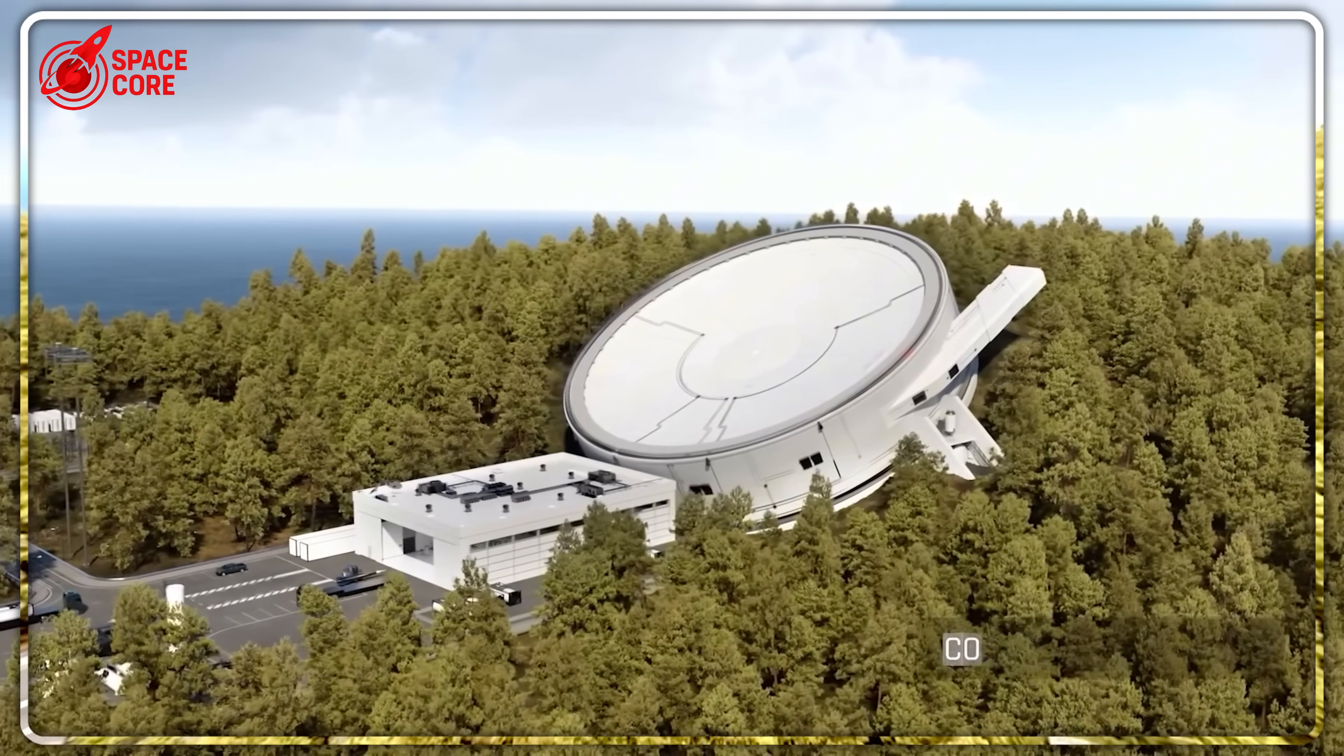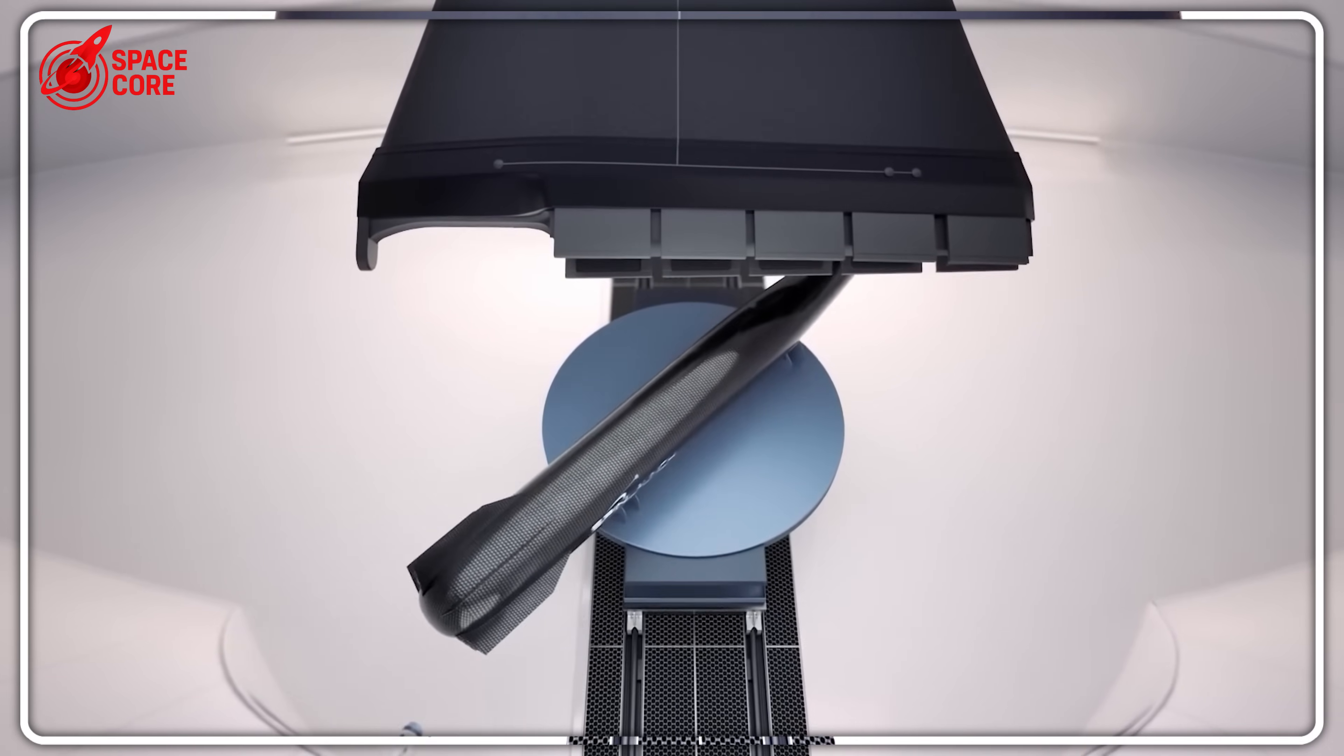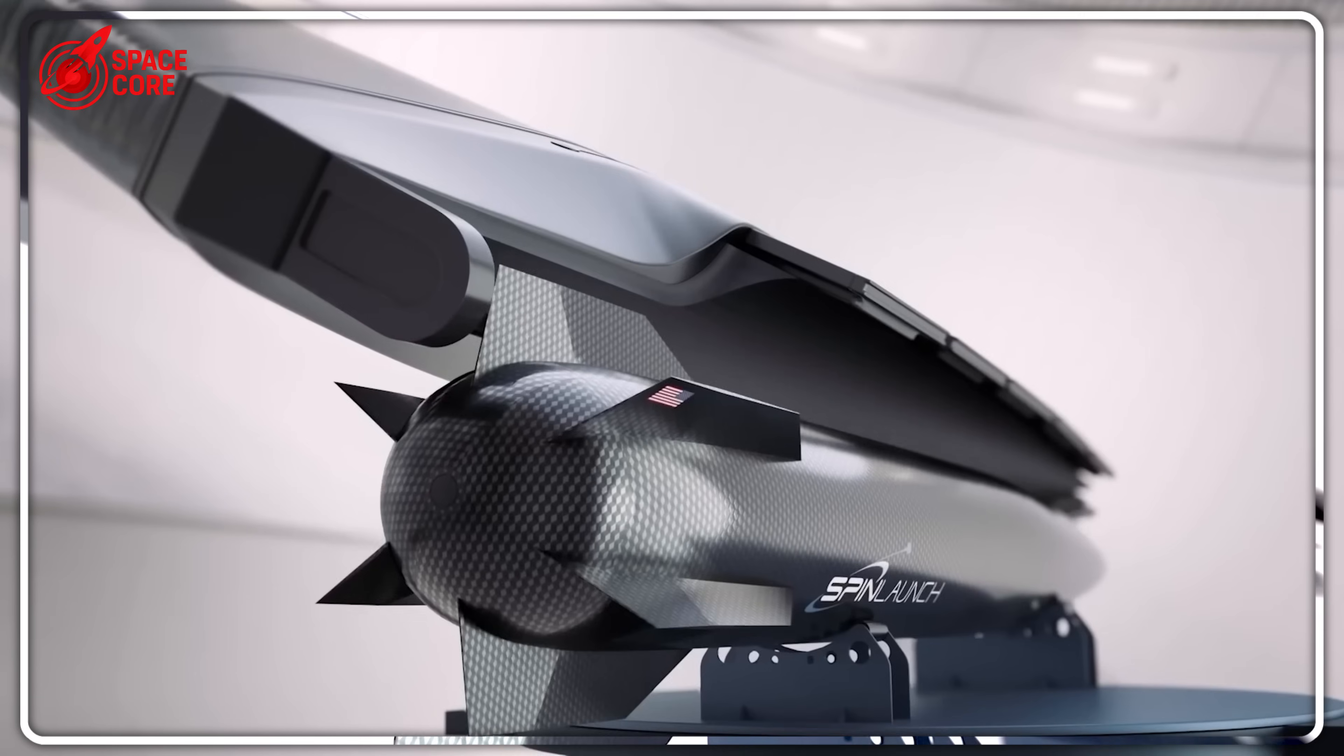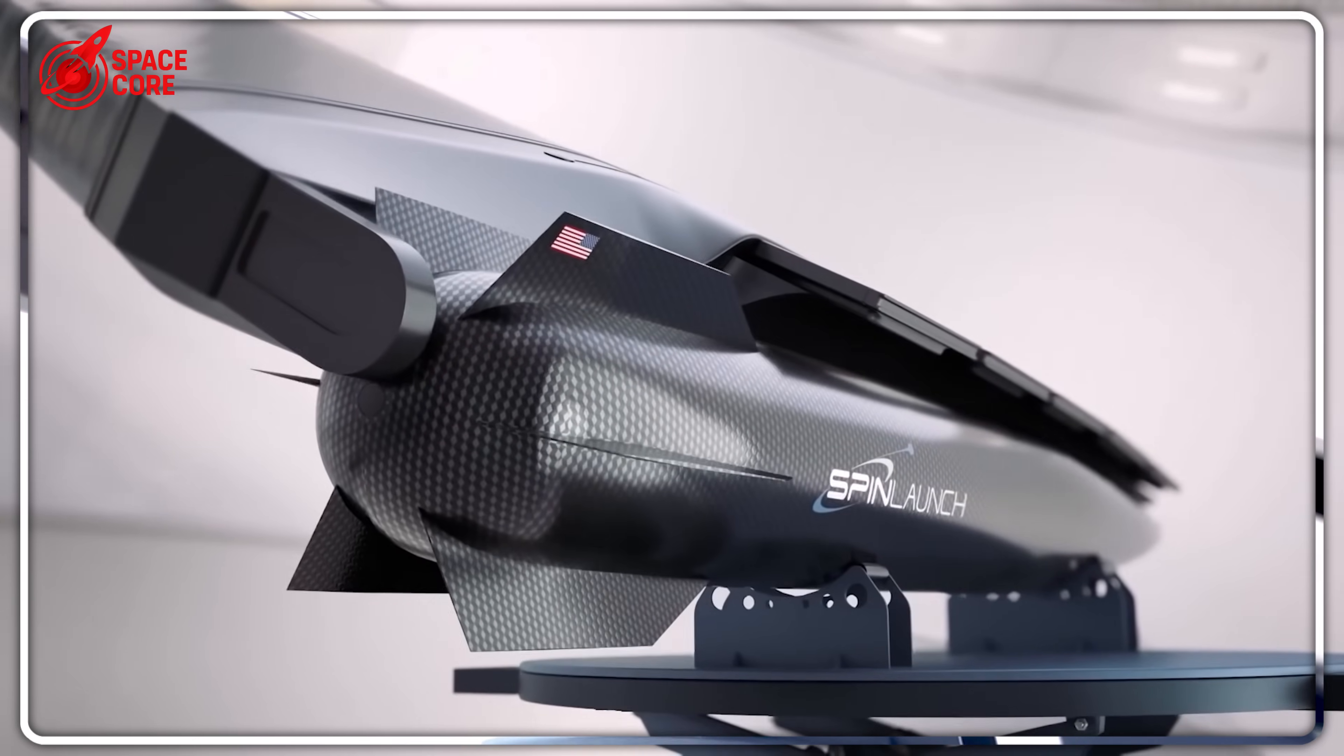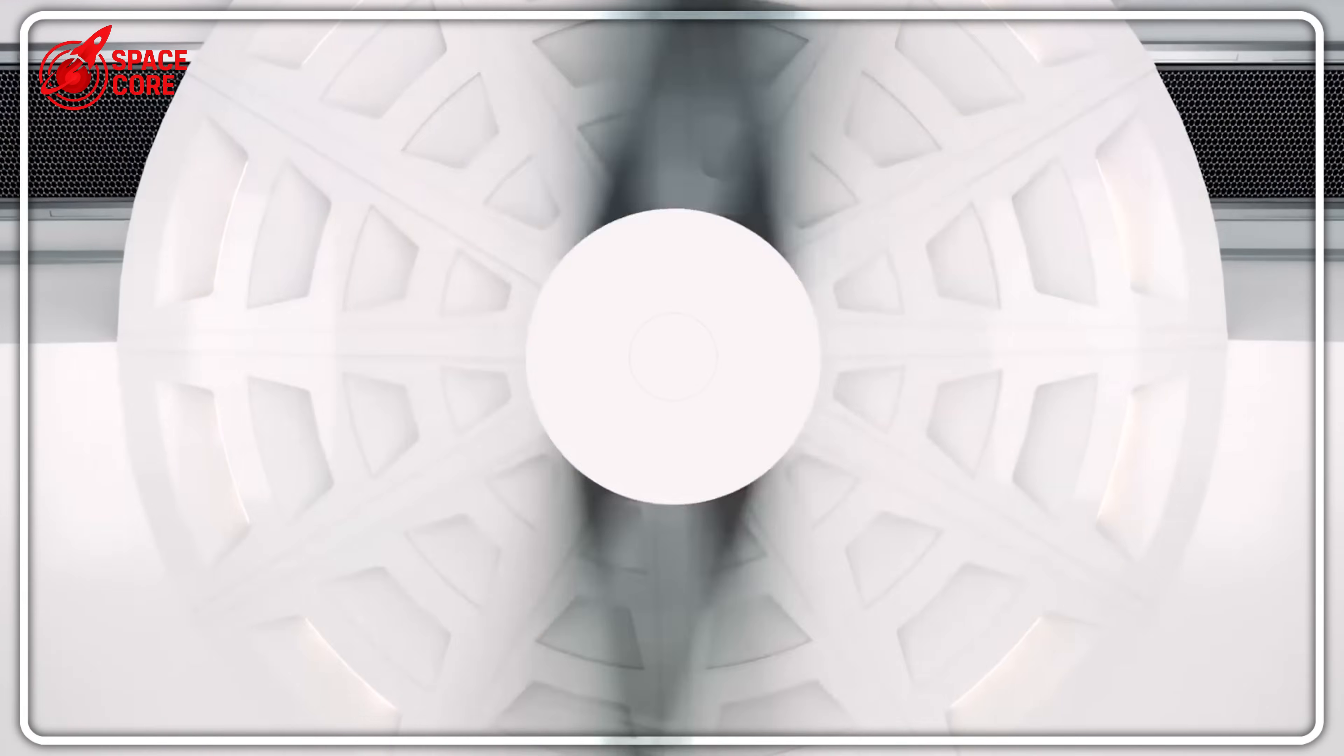Spin Launch didn't just build a rocket alternative. They engineered what amounts to a massive electric catapult that could theoretically hurl satellites into space at 20,000 miles per hour. And here's what few people realize: the physics actually worked.